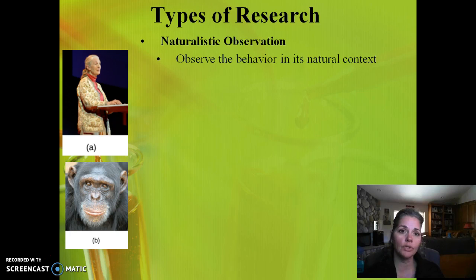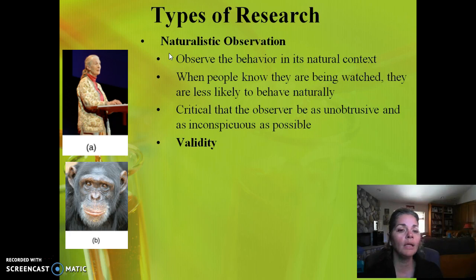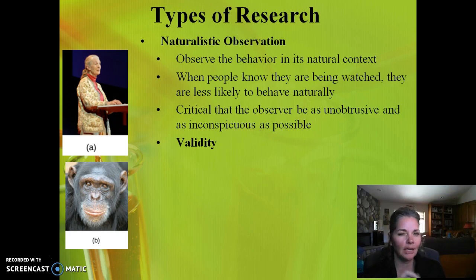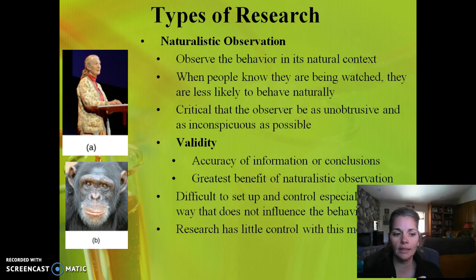Another type of observational research is naturalistic observation. You're observing subjects in their own natural environment without interacting with them. You want to be behind the scenes as much as possible, because even your presence can modify their behavior — so you want to be as inconspicuous as possible. For childhood observations, for instance, you have to be careful not to be interactive because then you're modifying the behavior. Naturalistic observations are great for expanding validity, giving us accurate information because it occurs in that natural setting.